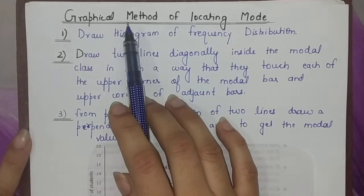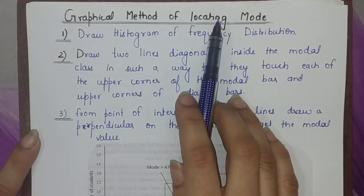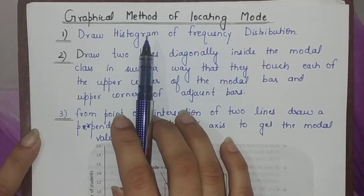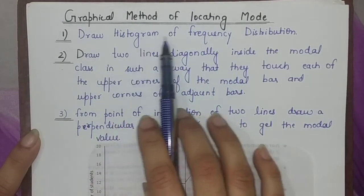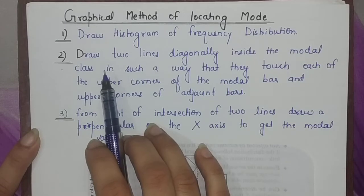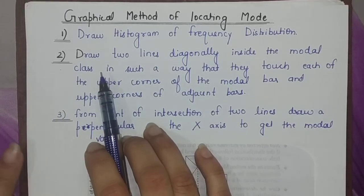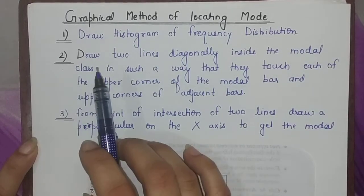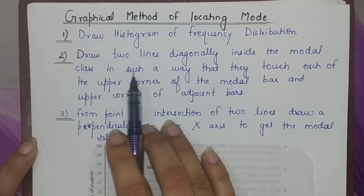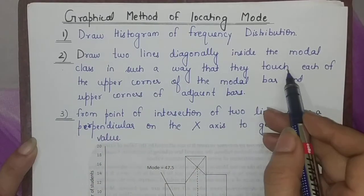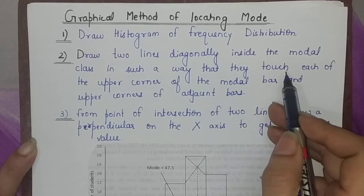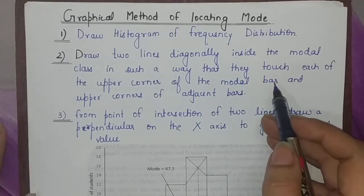When we talk about the graphical method — how to find the mode with the help of a graph — there are basically three steps. First, you need to draw the histogram of the frequency distribution given to you. Then in the second step, inside the modal class — the bar with the highest frequency — you need to draw two lines diagonally in such a way that they touch each of the upper corners of the modal bar.